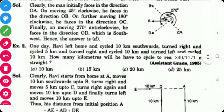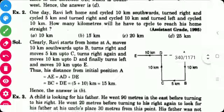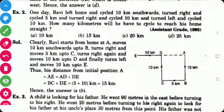Second question is one day Ravi left home. This is Ravi's home. He cycled 10 kilometers southward. So in this direction 10 kilometers. After that he turned right. Right direction is this west direction. Cycled 5 kilometers. Again he turned right means